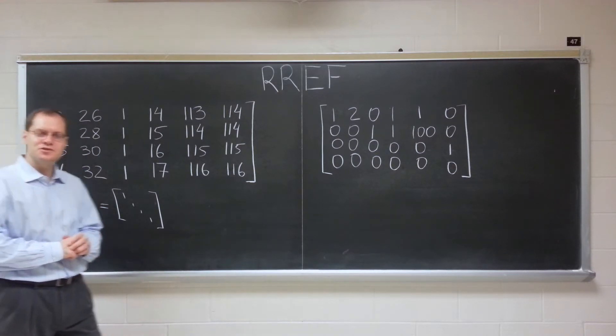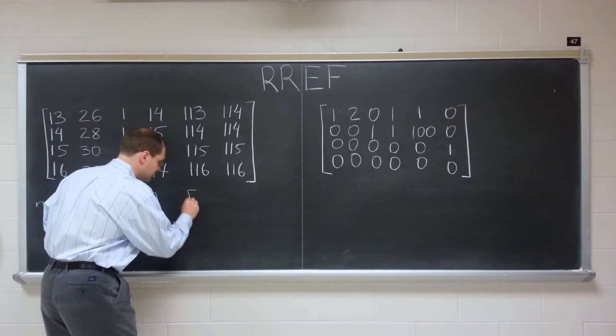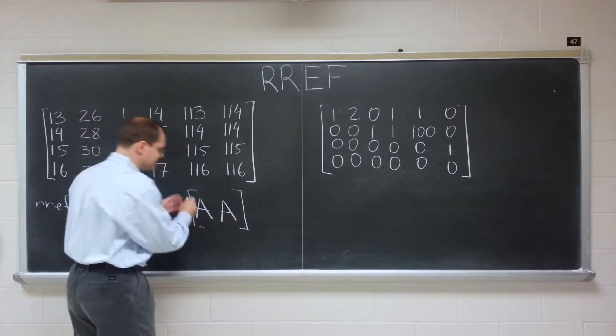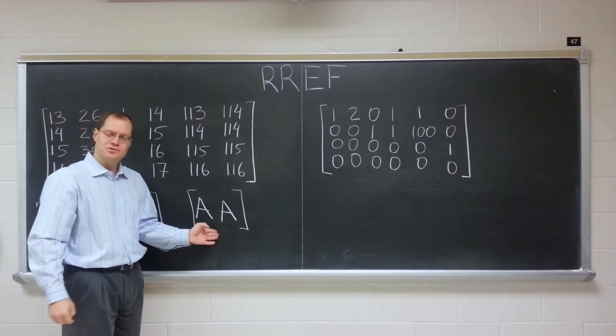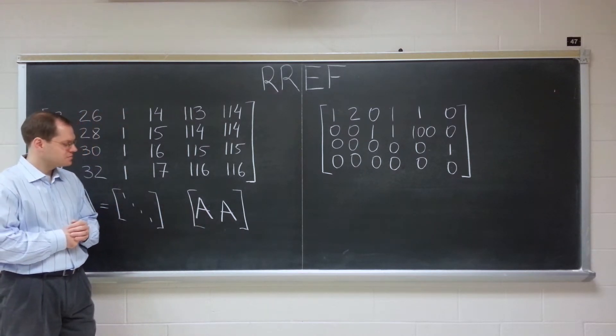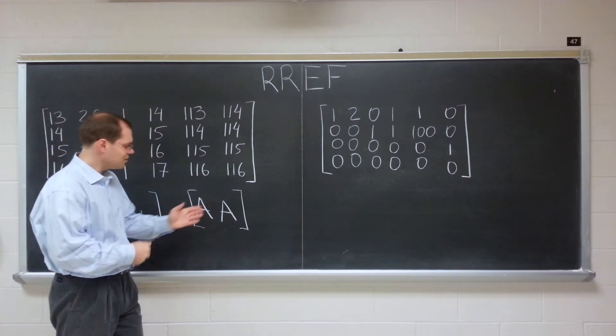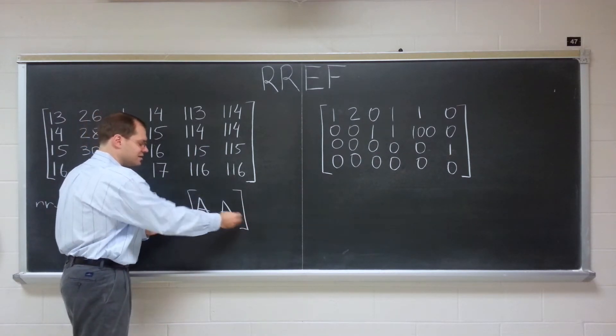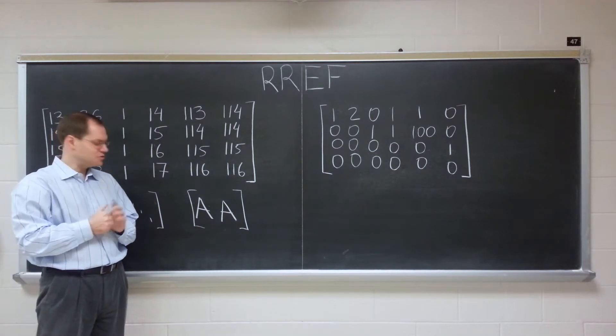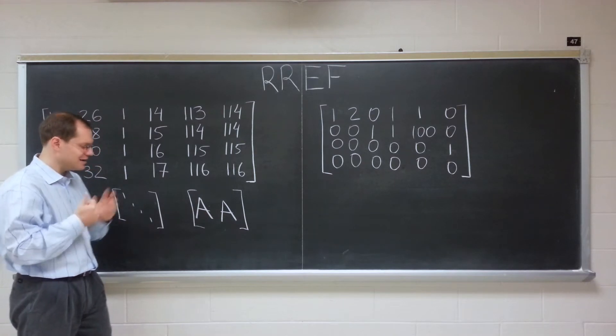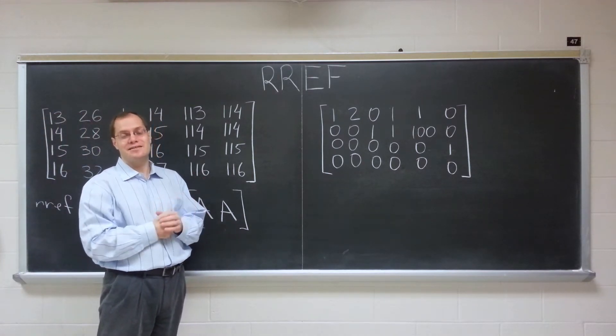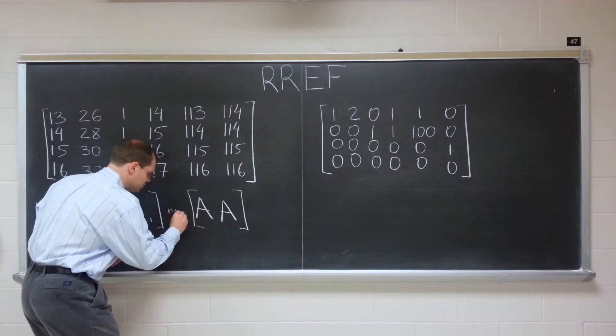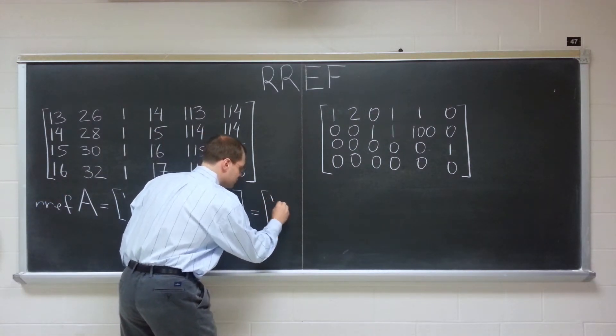Here comes question number two, for which I will reveal the answer. Think about this. Suppose you have an invertible matrix A, and you stick them into a matrix side by side. So if it's 10 by 10, this matrix is 10 by 20. What is the row reduced echelon form of this matrix? So pause the video if you'd like to think about it. Of course, it's all about guessing the relationships among the columns of this combined matrix.